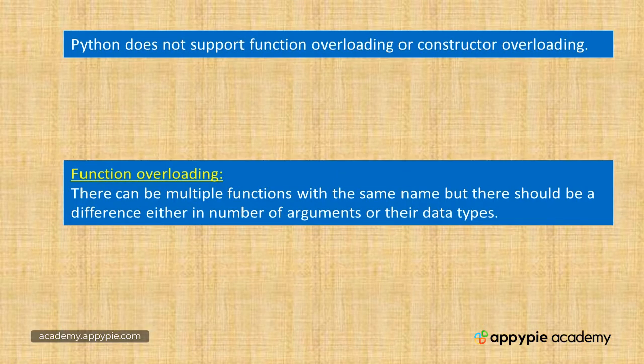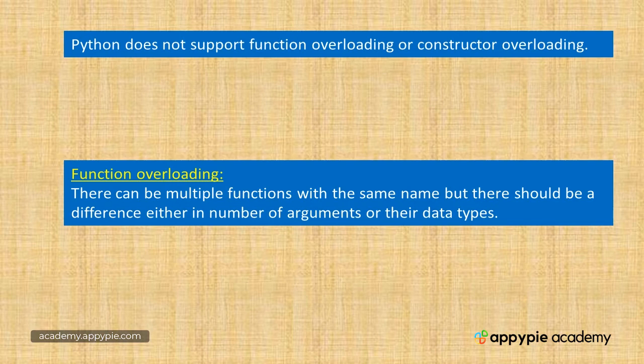Function overloading is a feature in which there can be multiple functions with the same name. It's an interesting thing, but there should be a difference either in the number of arguments or their data types. Function overloading is supported in C++ and Java, but it is not supported in Python.